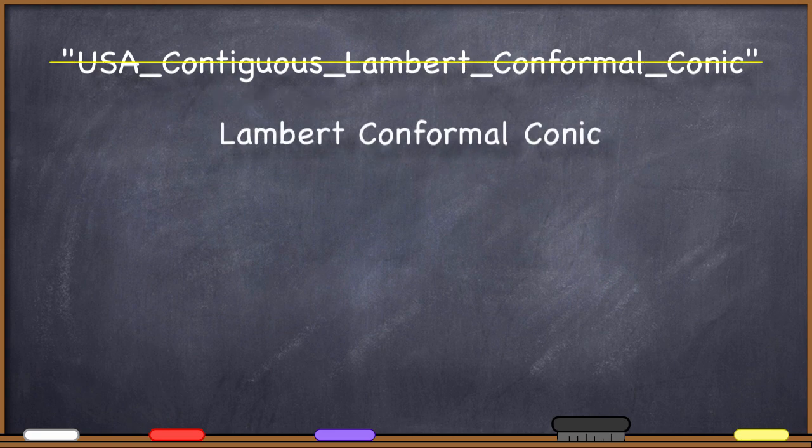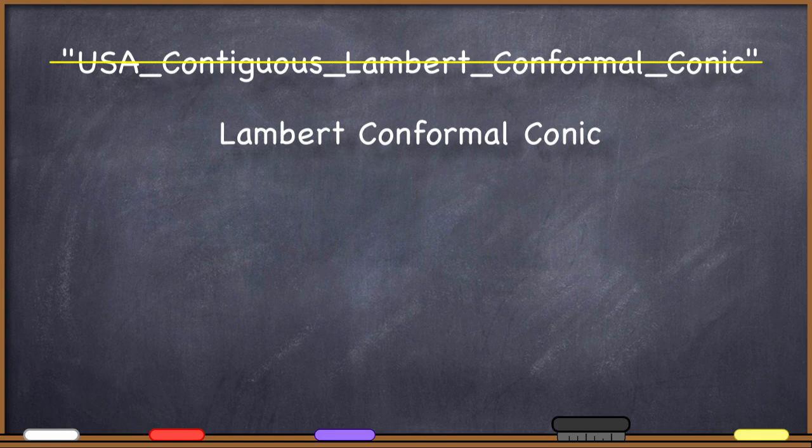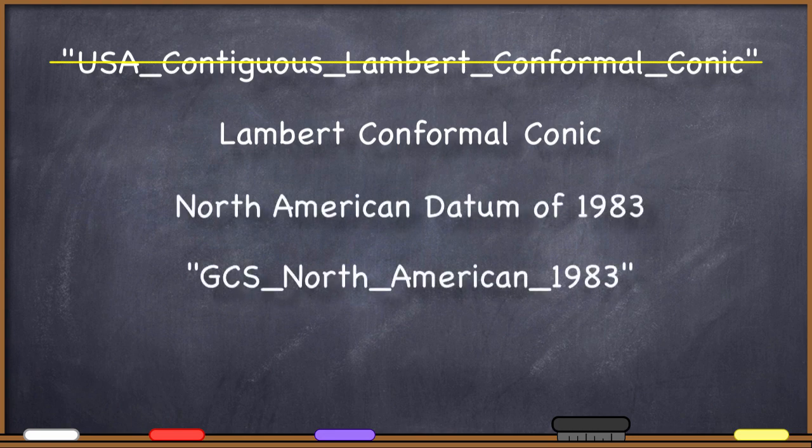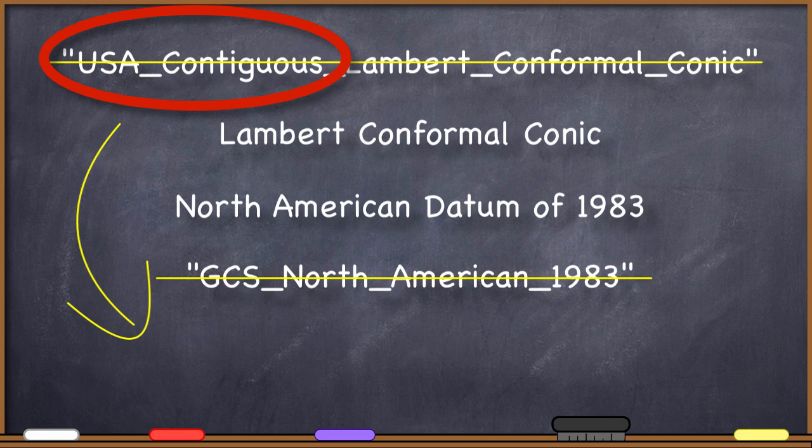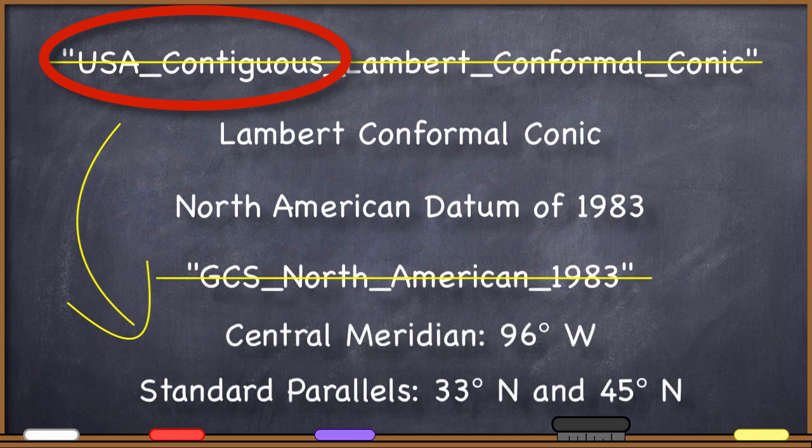USA underscore contiguous underscore Lambert underscore conformal underscore conic is not the name of a projection. It's just the Lambert conformal conic projection. Similarly, if you need to refer to the North American datum of 1983, write the North American datum of 1983, not GCS underscore North underscore American underscore 1983. By the way, that USA underscore contiguous part is just telling you that particular file's projection parameters are supposed to be optimized for the contiguous United States.